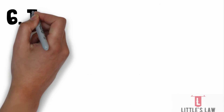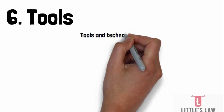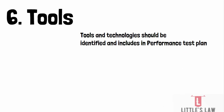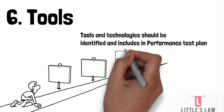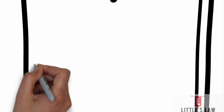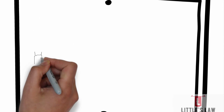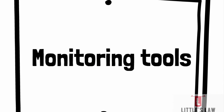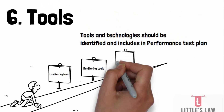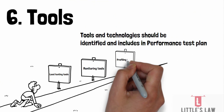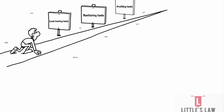The tools and technologies used for performance testing should be identified and included in the performance testing plan. For example, load testing software such as JMeter or LoadRunner may be used to simulate user behavior, and performance monitoring tools such as Nagios or Neuralink may be used to monitor the system under test. All these tools must be documented.